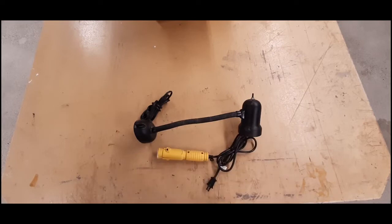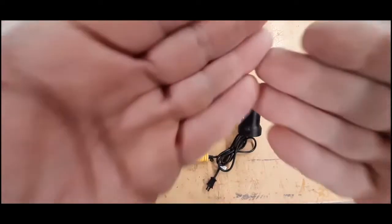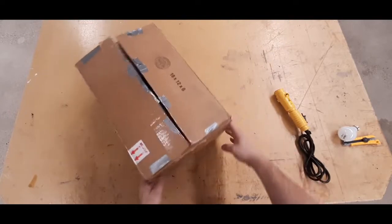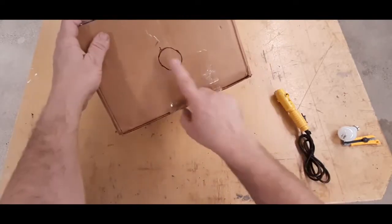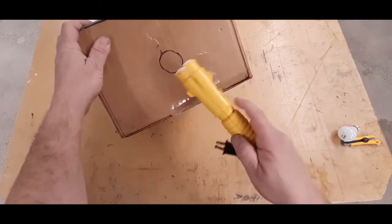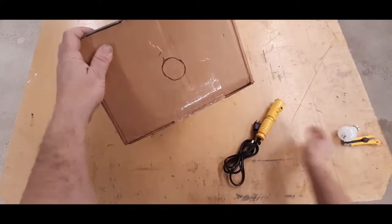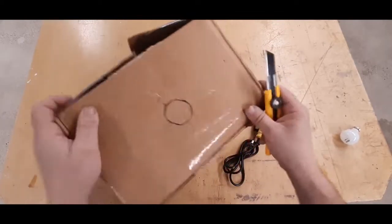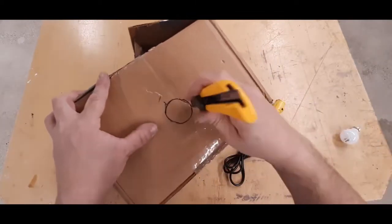Now it's time for the Olfa knife. Cut a hole on one end of the box big enough for the head of the desk lamp to fit snugly in. In my case, the mechanic's light.